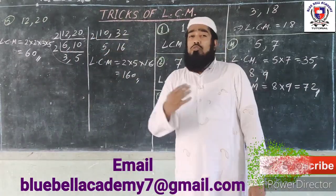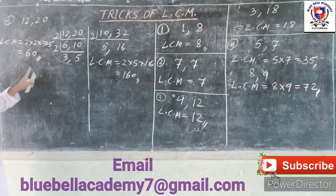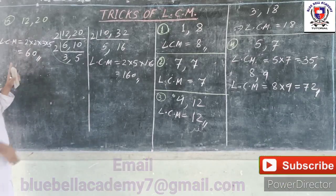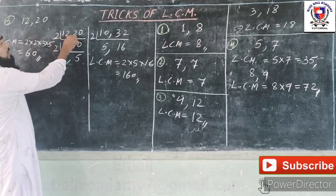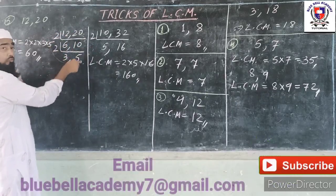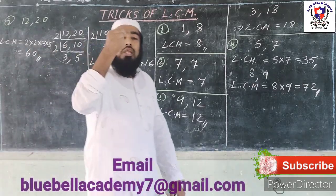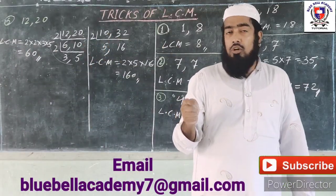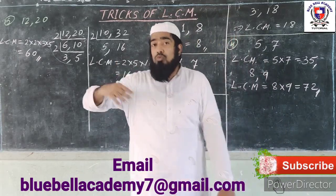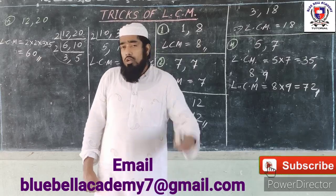Regarding the division method, I suggest always taking prime factors — not composite numbers. Always take prime numbers: 2, 3, 5. In that way, you just check whether both numbers are divisible or not. This keeps the method clean and systematic.